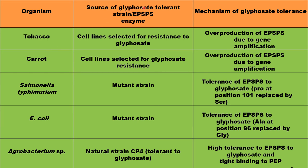For example, in the case of carrot, the source of glyphosate tolerance is a cell line selected for glyphosate resistance. The mechanism of glyphosate tolerance in this case is the overproduction of EPSPS due to gene amplification.